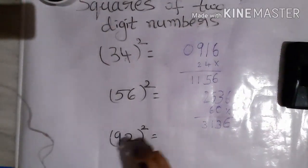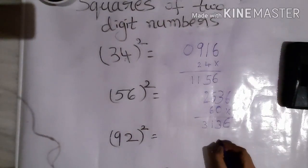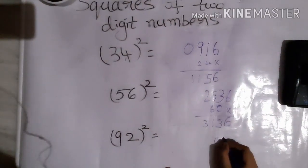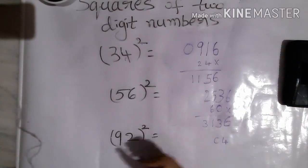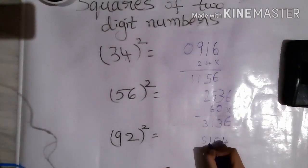Now 92 squared. 2 squared is 4, and 9 squared is 81.